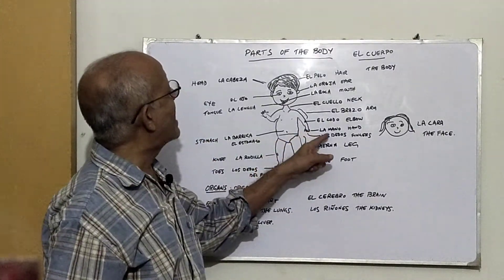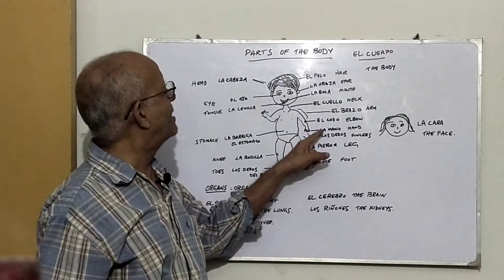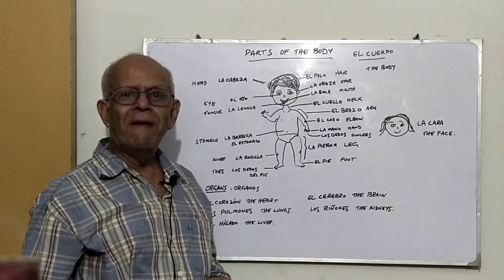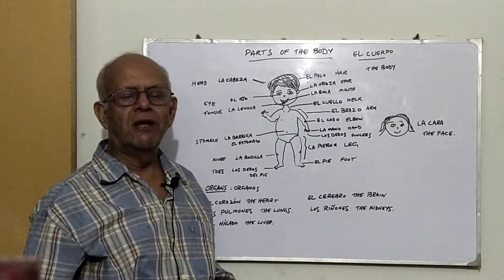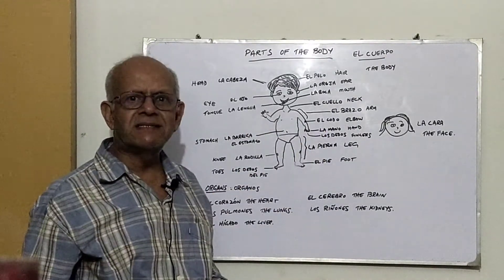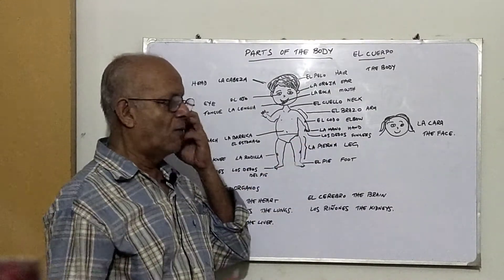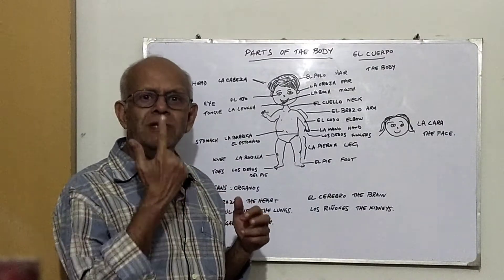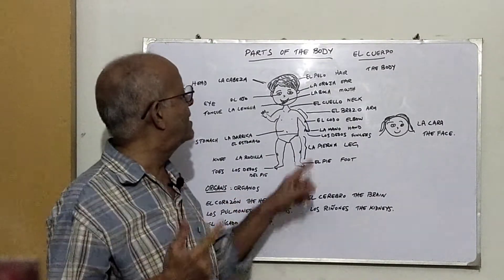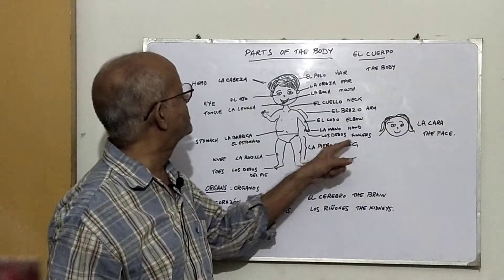The hand - la mano. Now mano is not a masculine noun, it's not el mano. This is an exception - it's la mano. Both hands will be las manos. And the fingers - los dedos. One is el dedo or un dedo, and los dedos - all the fingers.